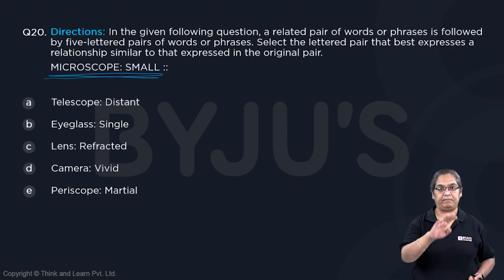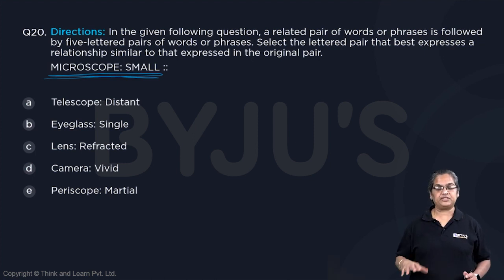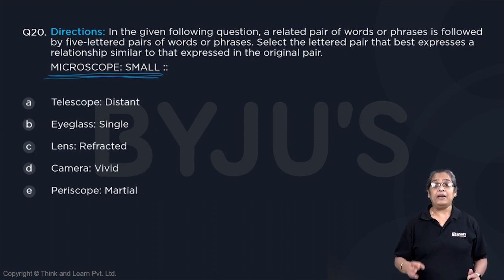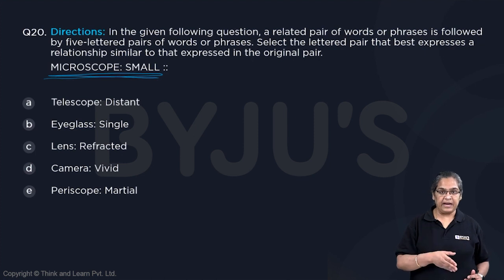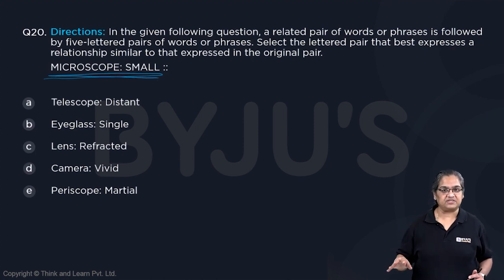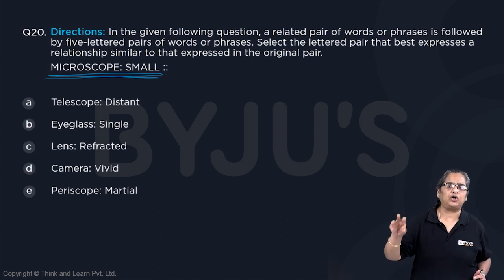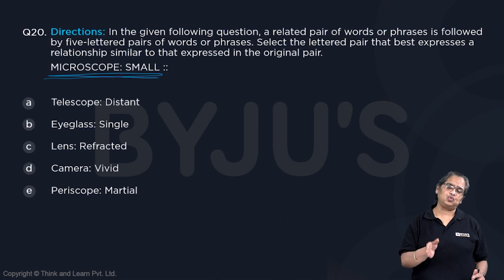That is the original pair, the question pair. Microscope is to small. So, you determine what is the relationship between microscope and small. Microscope is an instrument that is used to observe small things — you can see, spot, observe small things through a microscope.